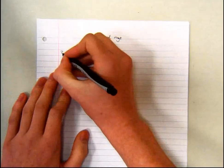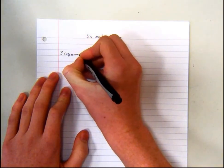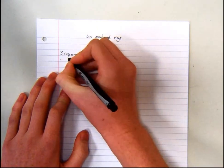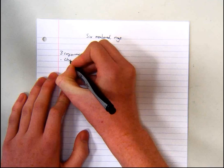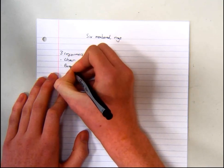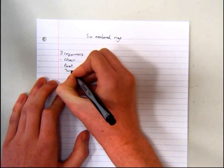There are three non-planar conformers of six-membered rings. It's the chair conformer, the boat conformer, and the twist boat conformer.